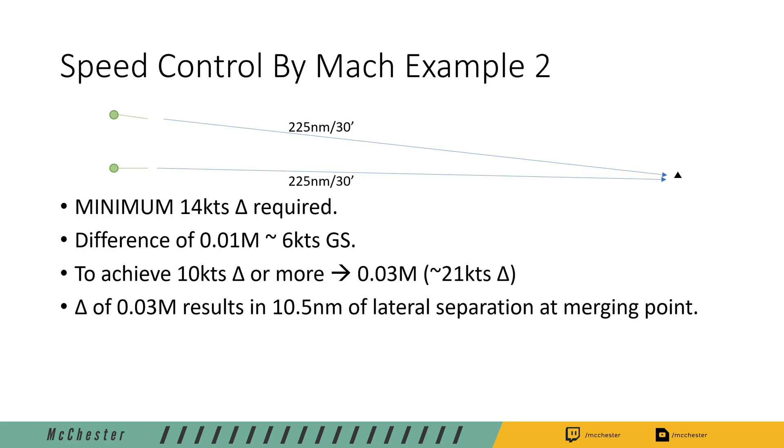Why 10.5 miles? Let's extrapolate this for the hour. We will have a speed difference of 21 knots for a full hour because it's a delta speed and we only have half an hour of time. So half of 21 knots is 10.5 nautical miles.